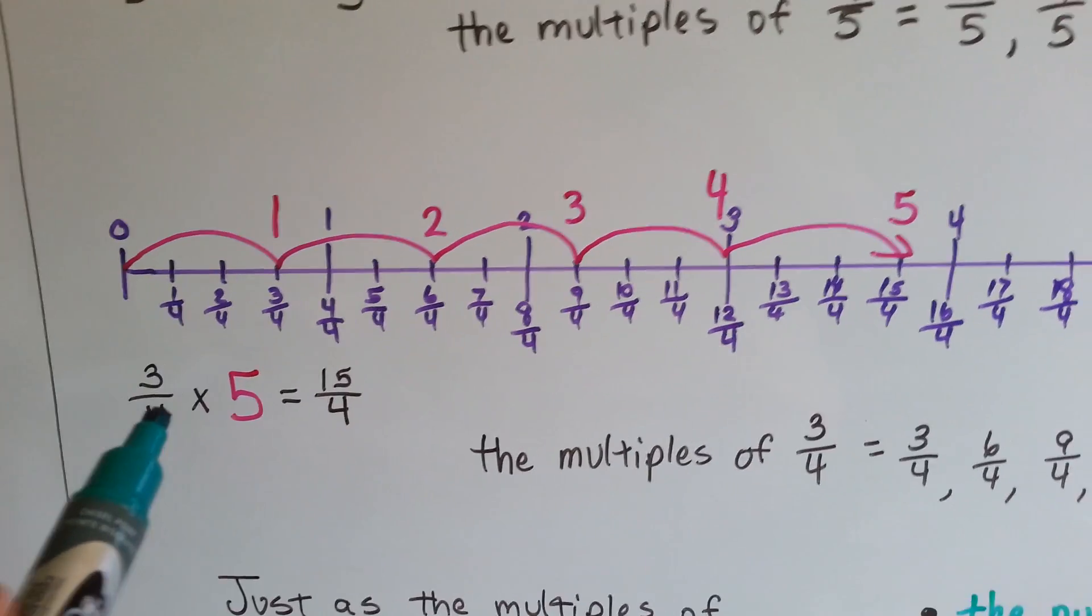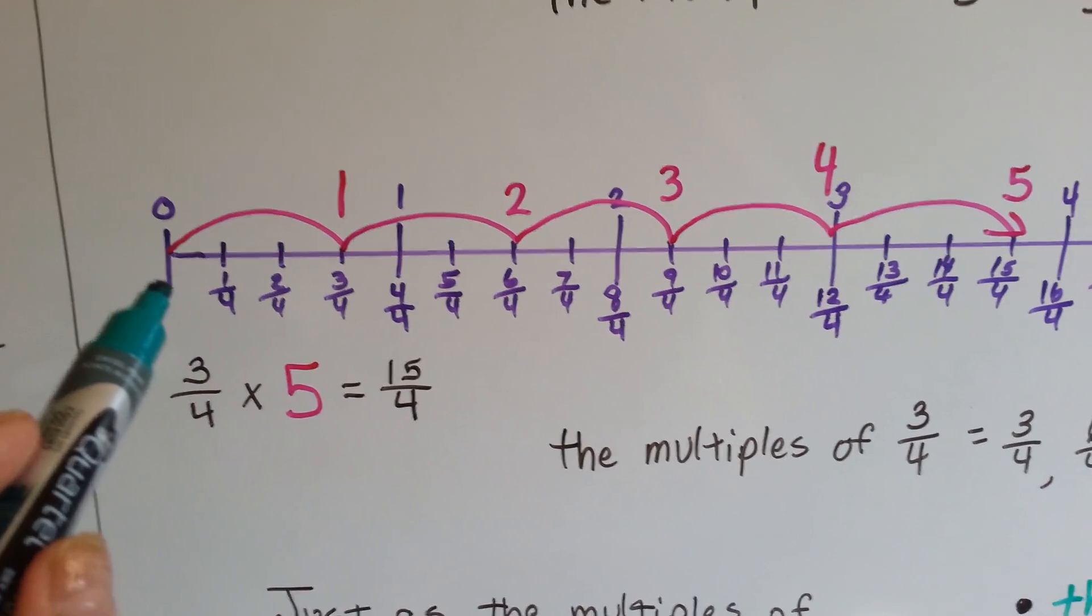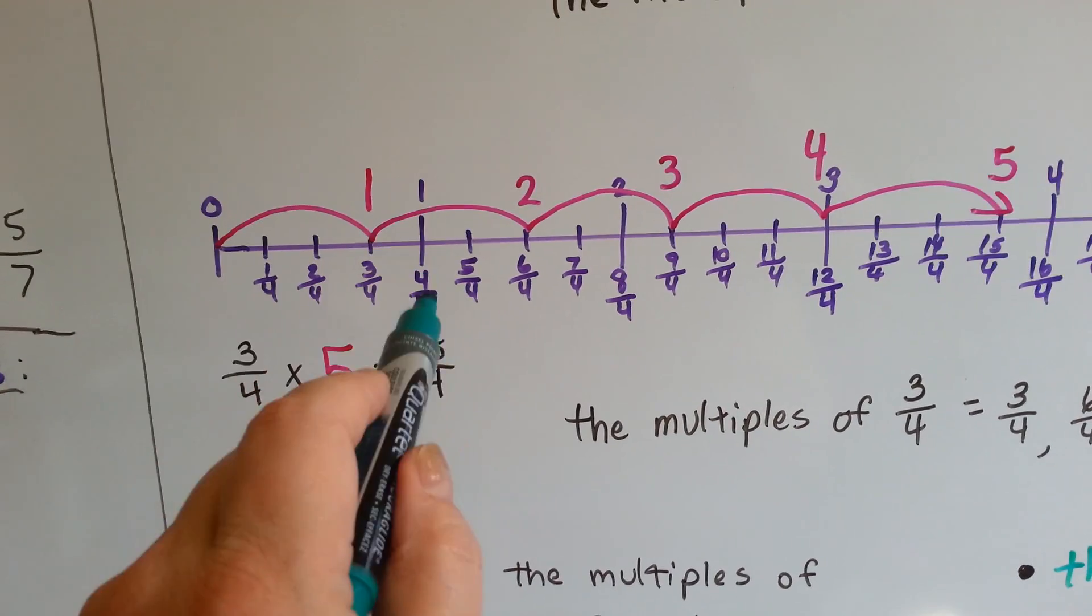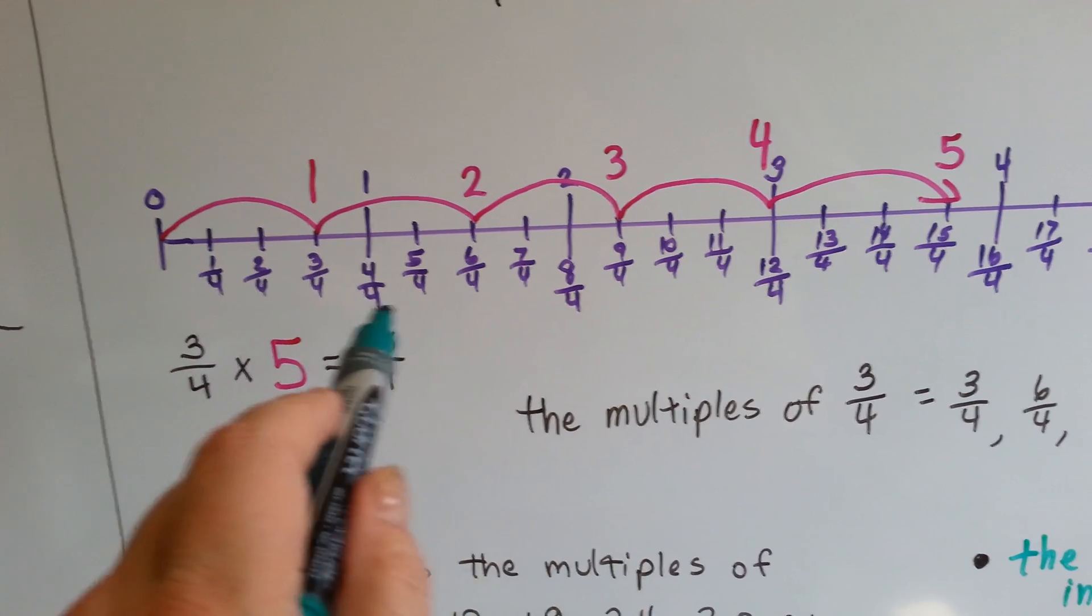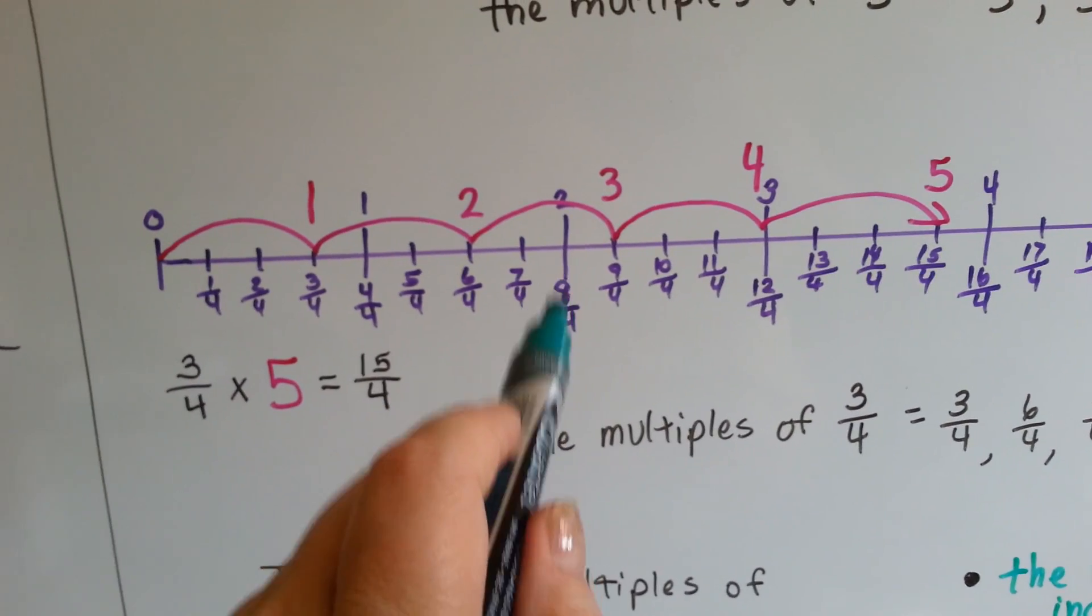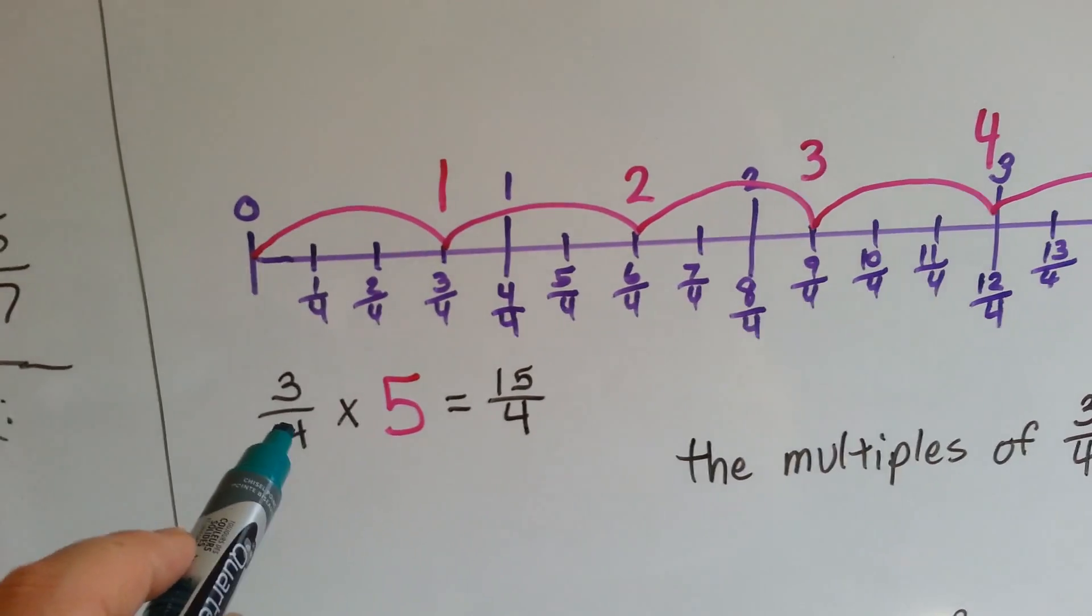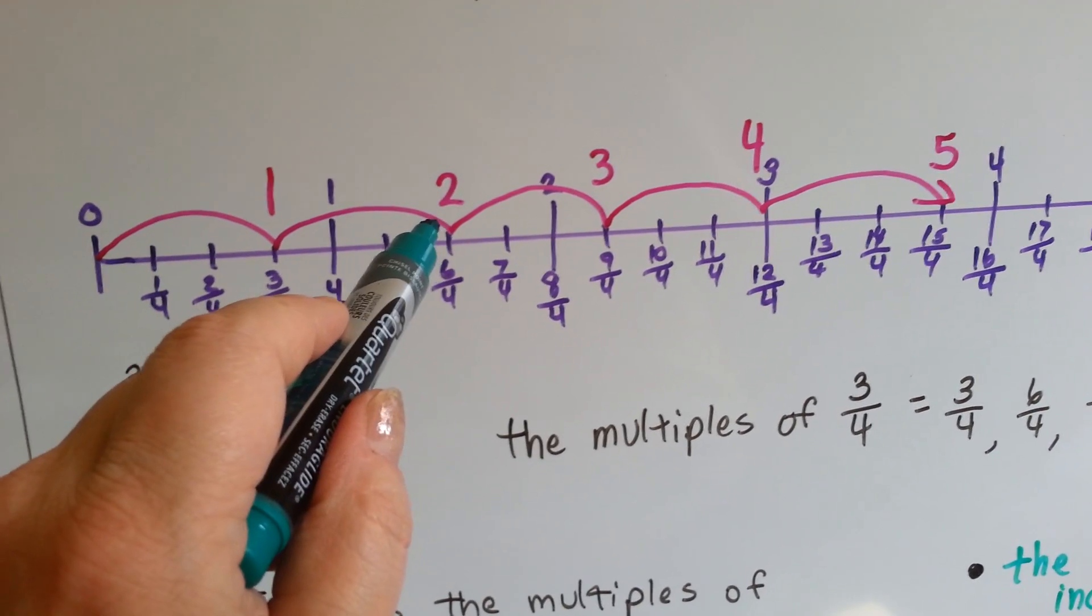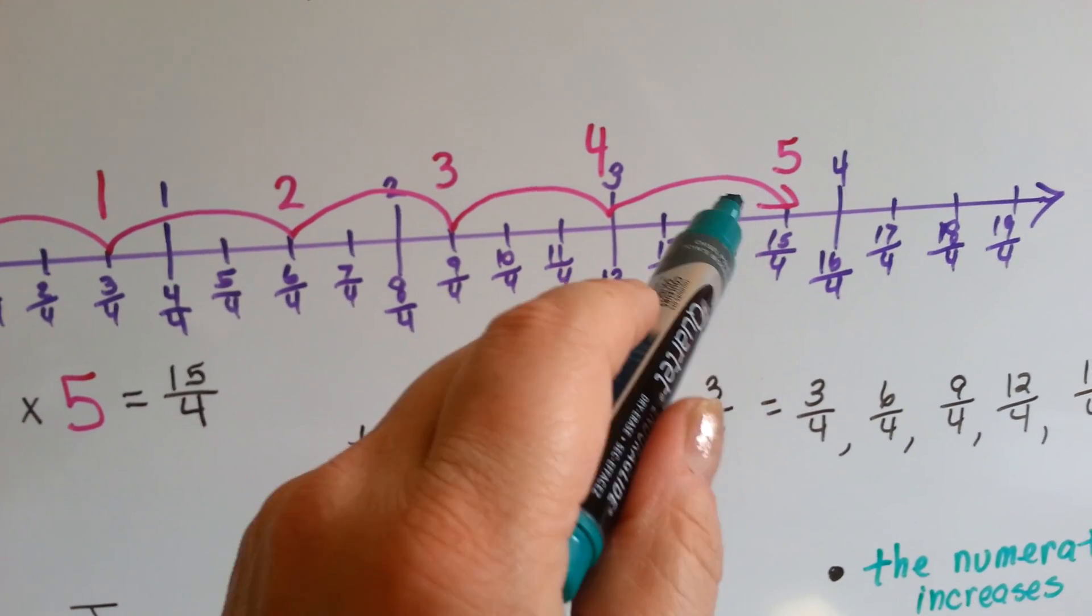Now let's look at 3 fourths. If we had 3 fourths times 5, that means we'd have 5 of these little 3 fourths. If we had a number line that started with 0 and went up, 4 fourths is 1, 8 fourths is 2, 12 fourths is 3. When the numerator and the denominator are the same, it equals 1. If the numerator is double, then it would be 2, and so on. If it's triple, it's 3. We're going to jump by 3 fourths, and we're going to do it 5 times, starting with 0. One jump is 3 fourths, the second jump is 6 fourths, the third jump is 9 fourths, the next jump is 12 fourths, and then the final jump is 15 fourths.